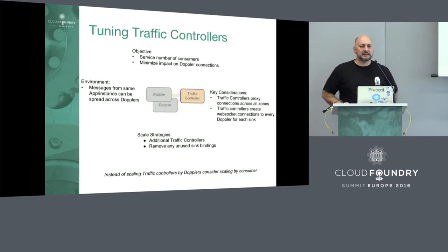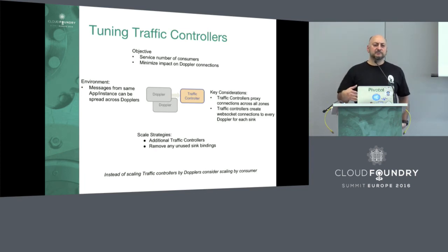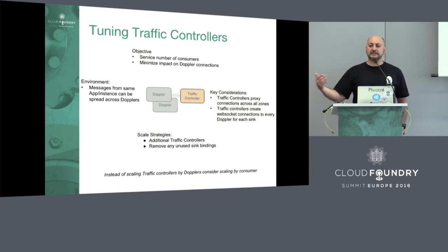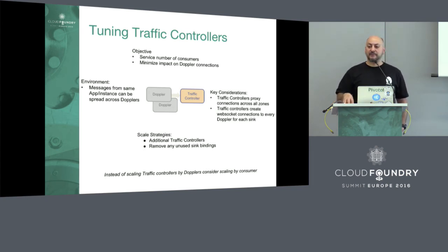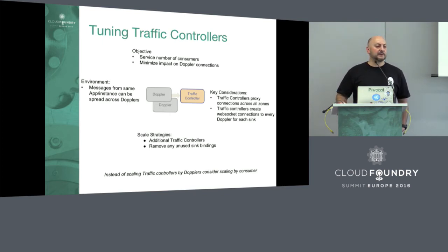And then lastly, the traffic controllers. Some information has been out about how many traffic controllers per Doppler — that's a good rule of thumb. But in general, you want to look at how many consumers you have. Within the system, if you're familiar with a reverse proxy, that's effectively what traffic controller is — here's one endpoint, but it creates connections to every single sink on every single Doppler. If you have a ton of traffic controllers but only one or two nozzles, you're basically making the Dopplers pay an extra overhead cost for managing each one of those connections when you don't need to. You can help Dopplers out by scaling down your traffic controllers. If you're just running one nozzle and people are doing CF tail, usually a couple of traffic controllers are enough.